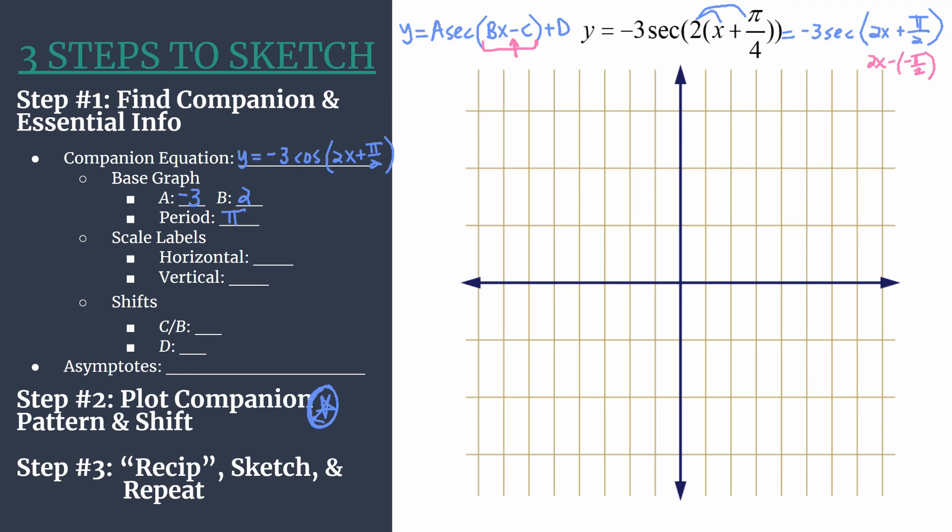Now we can choose how to label our axes. So be intentional for your horizontal axis in particular. Take the period and divide by 4. So our scale, we should count by pi over 4. And we do that so in step 2, that first companion pattern, that very first cosine graph that we plot lightly, each of those will nicely align with our horizontal tick marks. That's why we choose it this way. Your vertical scale, 1 usually works well. Check out that value of a, looks like that'll be sufficient in this case.